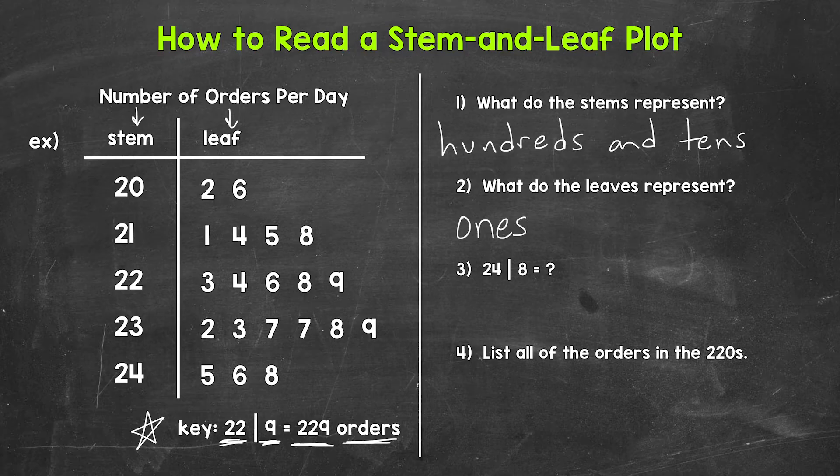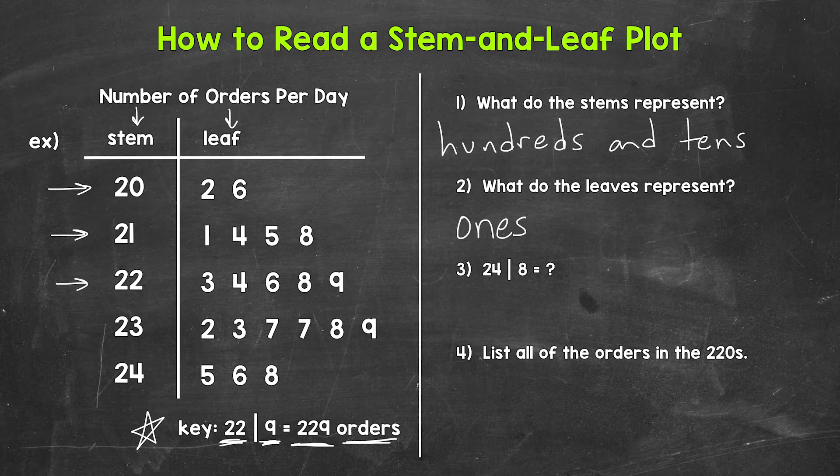For the stems, we have 20, 21, 22, 23, and 24. So we have the two hundreds, the two tens, the two twenties, the two thirties, and the two forties.